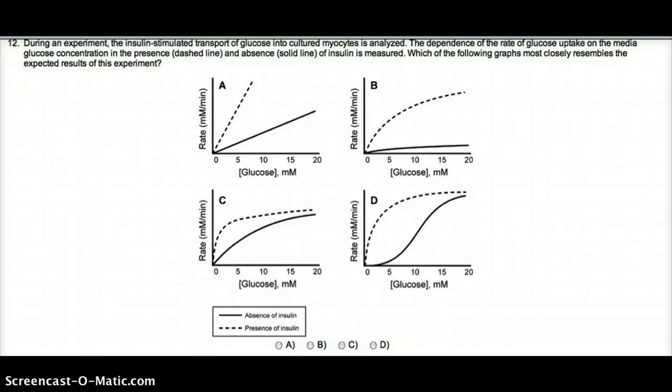During an experiment, the insulin-stimulated transport of glucose into cultured myocytes is analyzed. The dependence of the rate of glucose uptake on the media glucose concentration in the presence (dashed line) and absence (solid line) of insulin is measured. Which of the following graphs most likely resembles the expected results of this experiment?